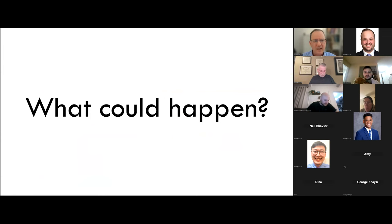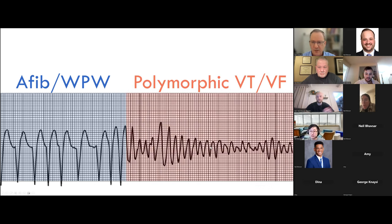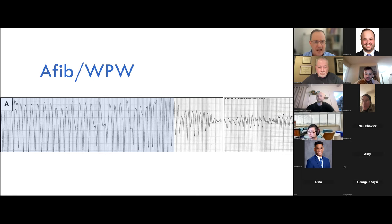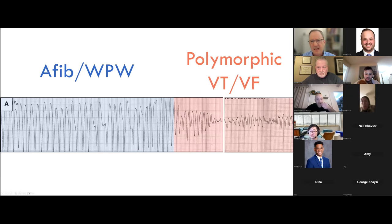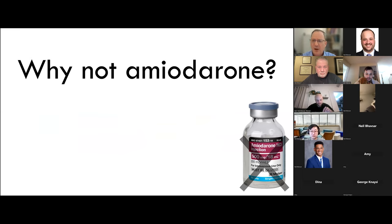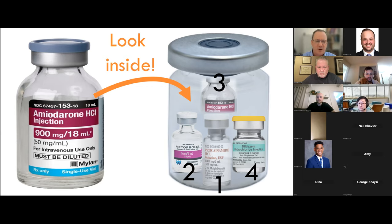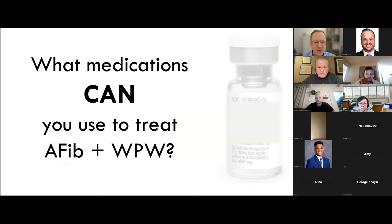If you block the AV node, you can shunt everything down the accessory pathway, which can cause ventricular fibrillation. On this strip, you see the patient in AFib with WPW on the left, then it overdrive paces the ventricle into polymorphic VT/VF. Amiodarone is also relatively contraindicated because inside amiodarone are beta blocker, calcium channel blocker, and type 1 antiarrhythmic properties — it has a little bit of everything, which is one reason it's very helpful but also why it's contraindicated here.